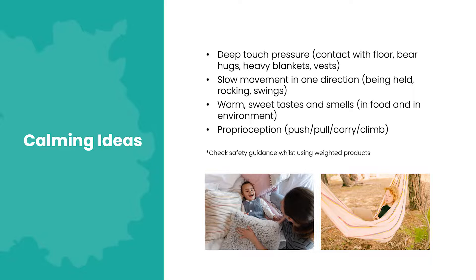For example, get your child to help you unload the washing machine, carry the washing basket or the shopping, help in the garden by pushing a wheelbarrow or a broom, or fill a bucket with soil to make a mud castle. Movement is another important stimulus. Predictable, linear movement generally calms the nervous system, whereas fast spinning or sudden changes of direction will excite it. Indoor children's swings, garden swings, and hammocks can provide calming and organizing movement at home. You could also try encouraging your child to lie on their tummy over a large yoga ball, slowly pushing off from their feet forward onto their hands and back again while you control the speed.